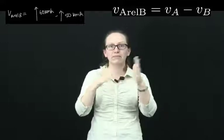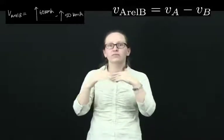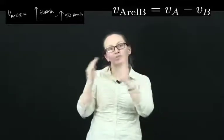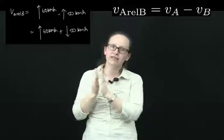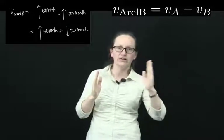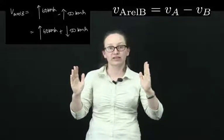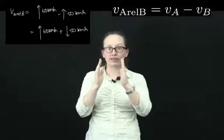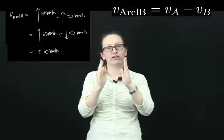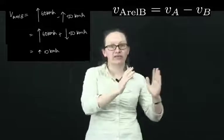Now remember that when we subtract a vector to make it a negative vector, we just switch its direction. So what we've got now is 60 kilometers per hour in the direction you're traveling plus 50 kilometers per hour in the opposite direction. When you add these two together, you're left with 10 kilometers per hour in the direction you're traveling.